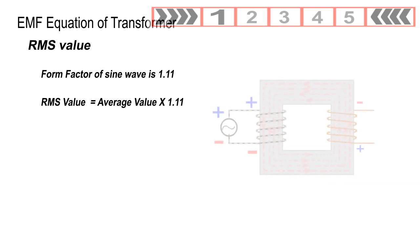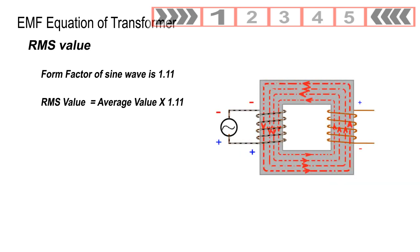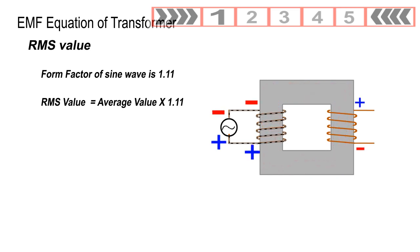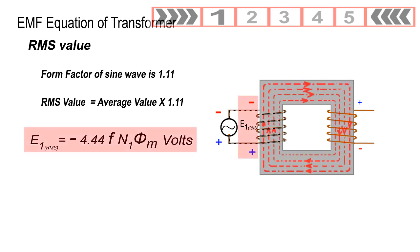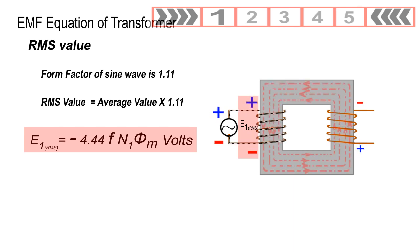In AC systems, RMS value is more frequently used than the average value. As form factor of sine wave is 1.11, RMS value equals average value multiplied by the form factor. Therefore, RMS value of induced EMF in the primary winding E1 RMS equals minus 4.44fN1φM volts.